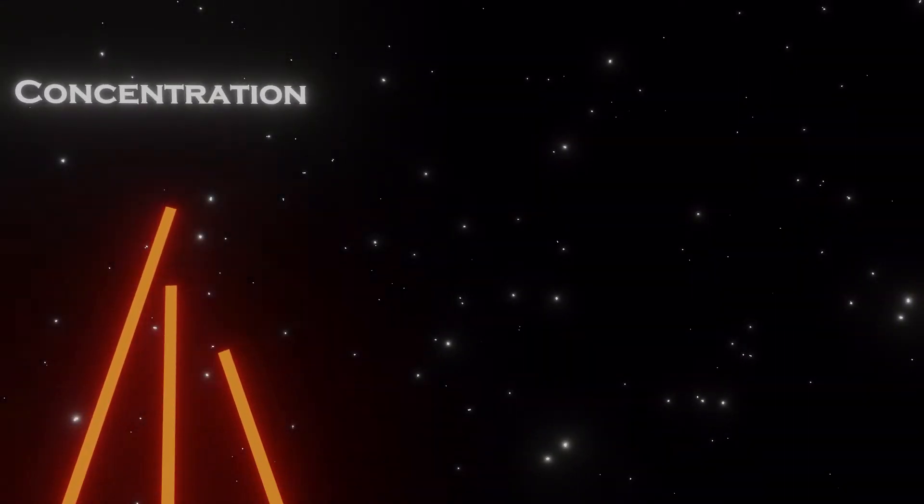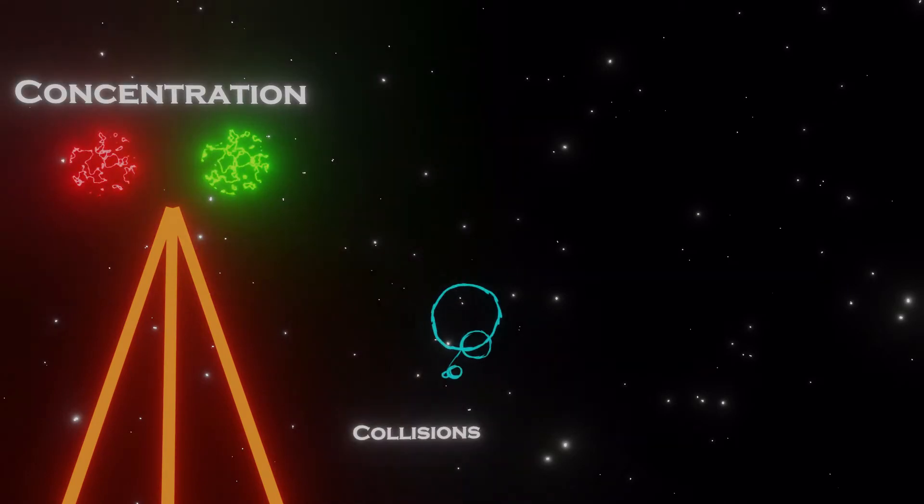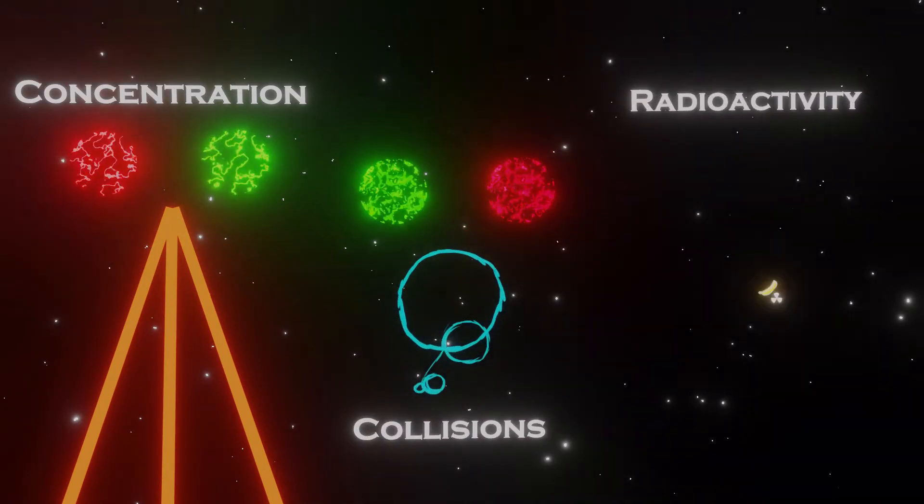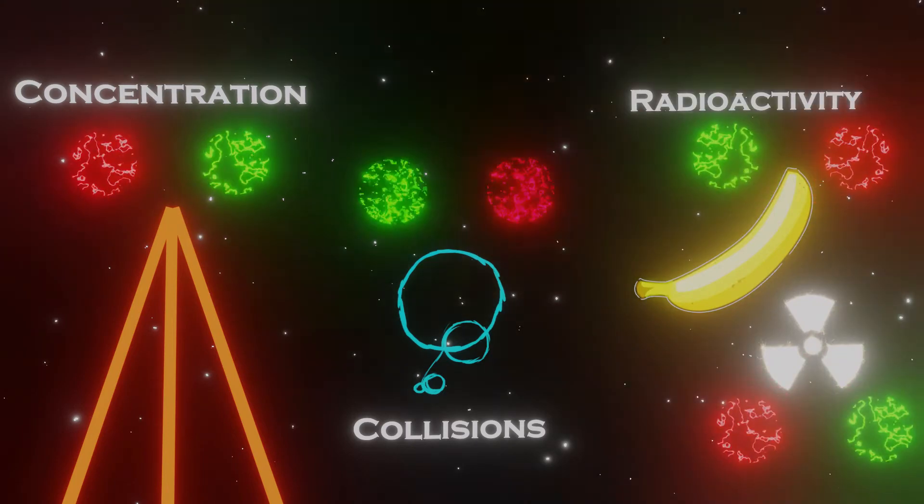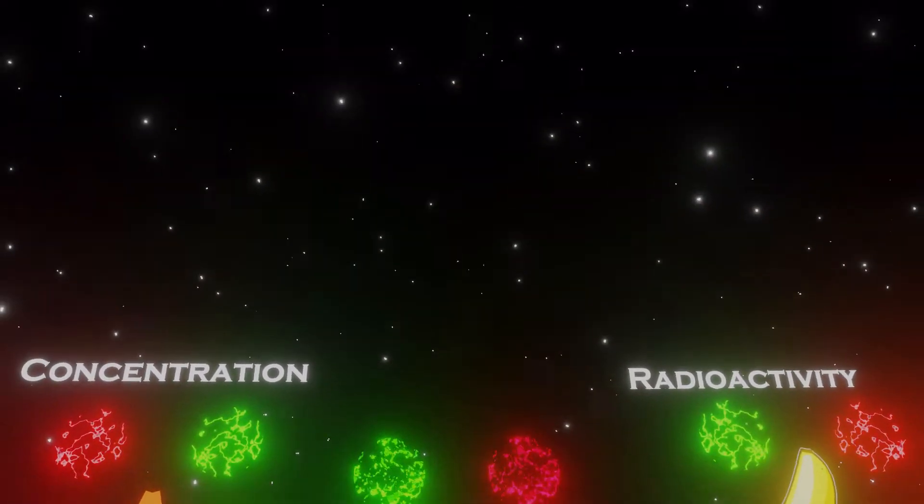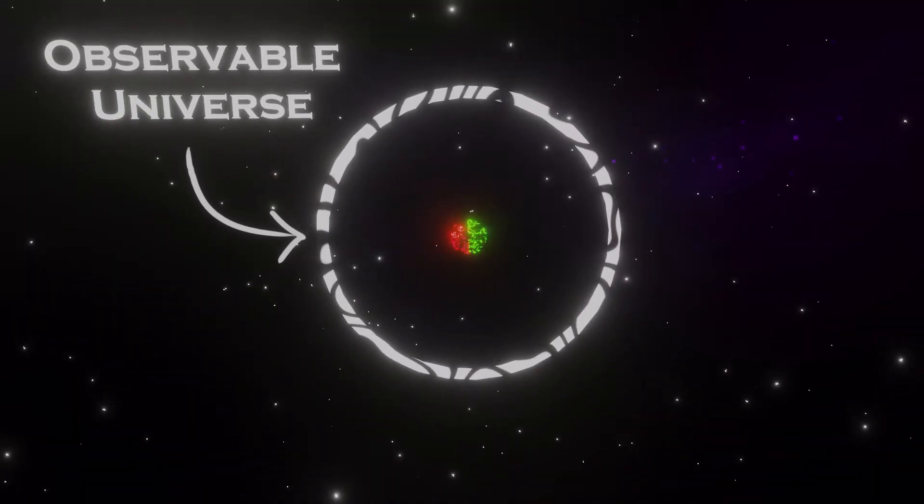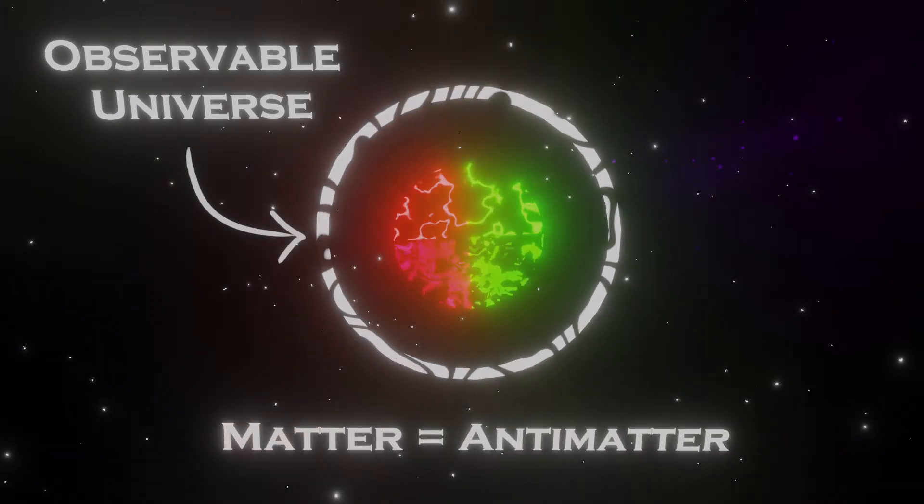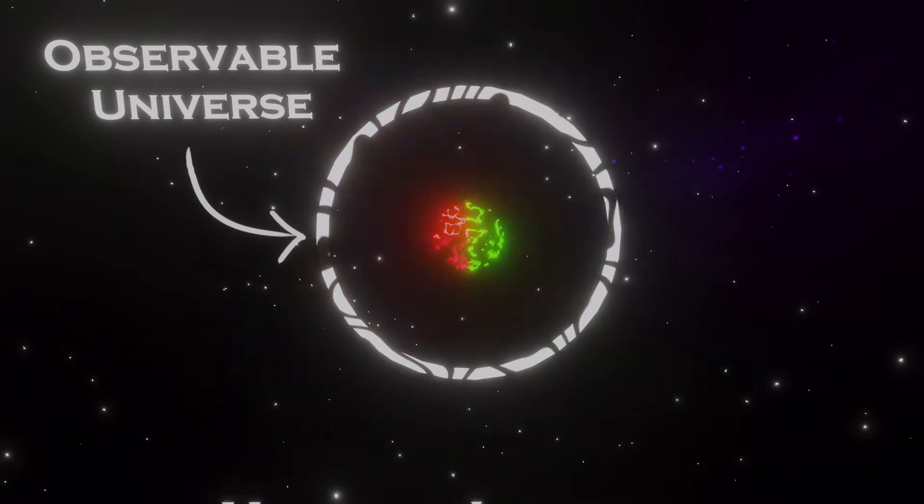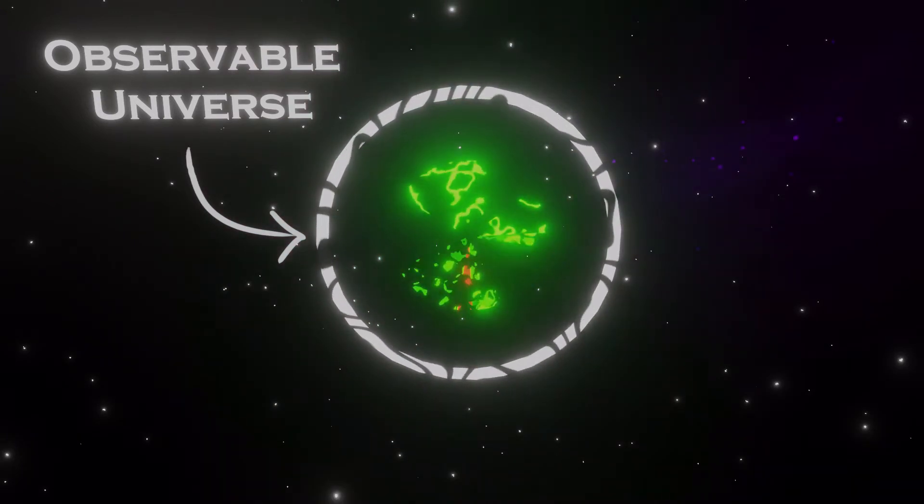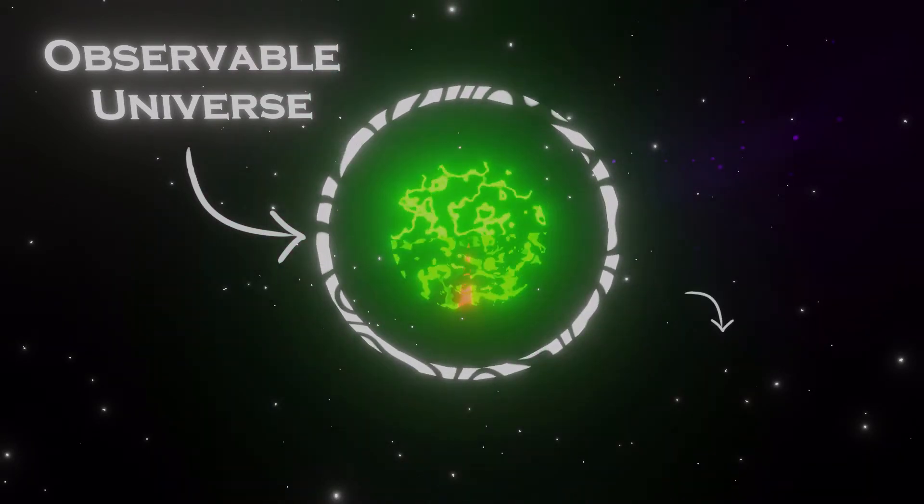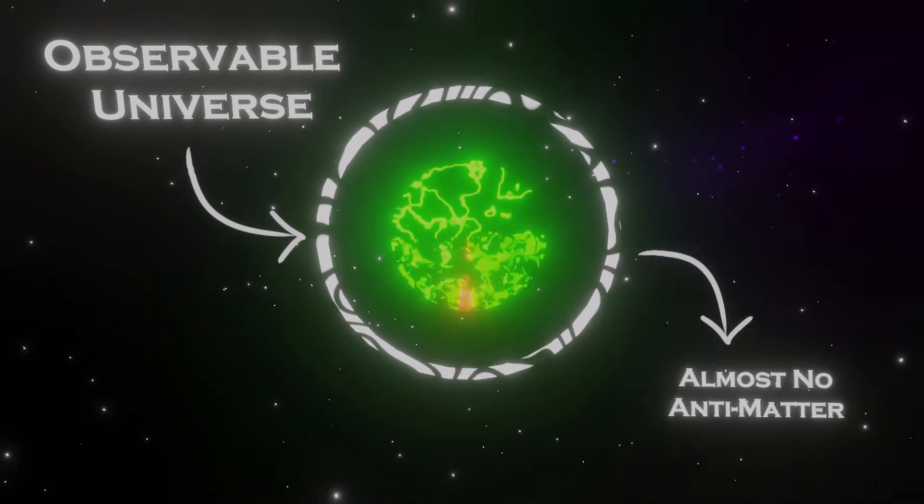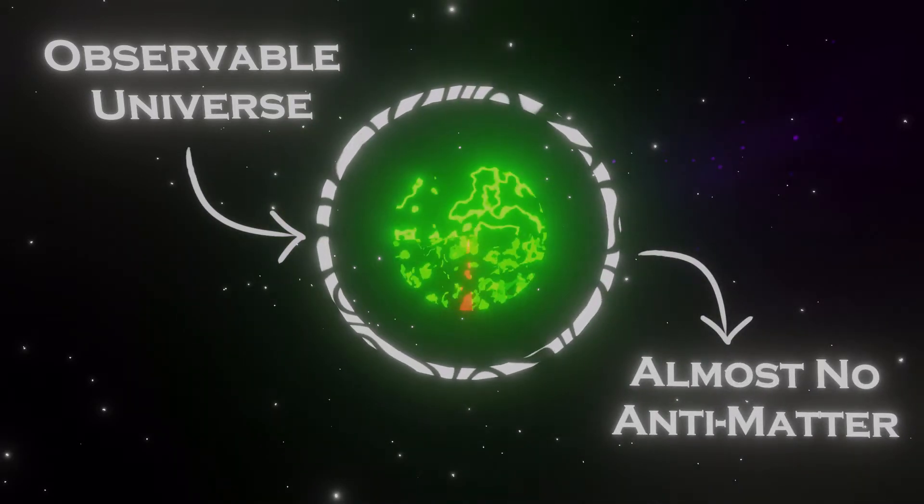However, all known methods of producing matter or antimatter from energy always leads to there being equal amounts of both matter and antimatter particles. This means that the universe should have equal amounts of both kinds of matter. Despite that, as far as we can see in the observable universe, there is far more matter than antimatter. So much so that we can state that the universe is almost entirely made up of regular matter only.